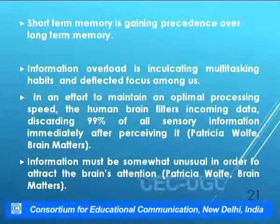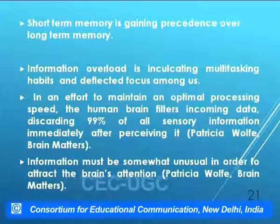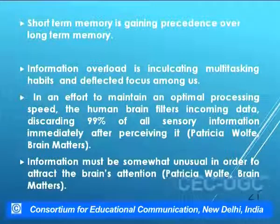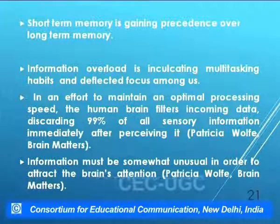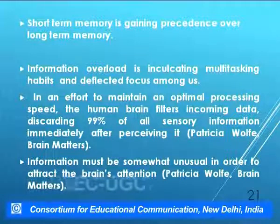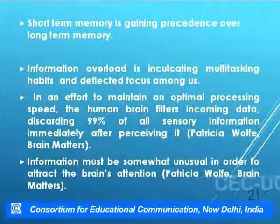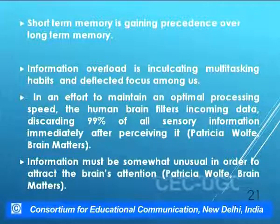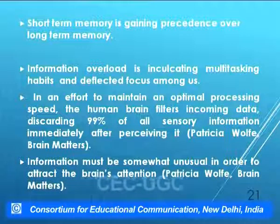According to George Miller's Law, the maximum number of information pieces the human brain can process at any given time is seven. We can conduct our own information audit — if the number of information pieces in short-term memory exceeds seven, it will definitely create information overload. Short-term memory is gaining precedence over long-term memory; people are more fond of receiving information now than analyzing it and storing it. Research has proven we are not multitaskers but very good unit-taskers — only 10% of the population or less is truly multitasking.